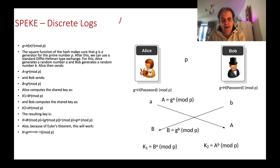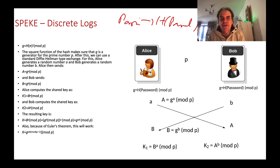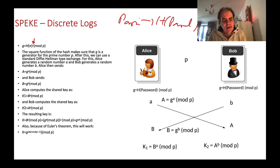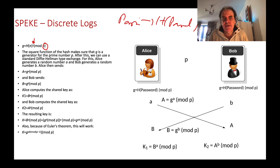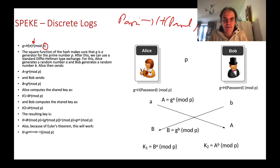Initially, we take a hash of the password, convert it to an integer, square it, and then take the mod of p, where p is a large prime number. The reason we square the hash value is to make sure we can create a generator value for our discrete logs with respect to the prime number p.